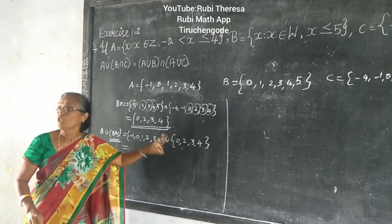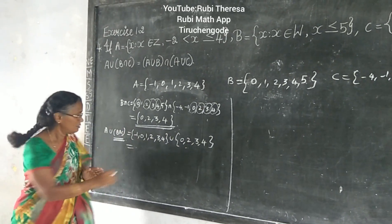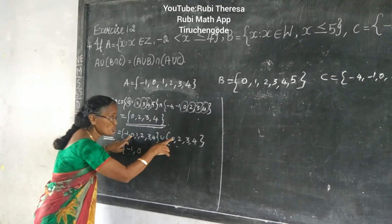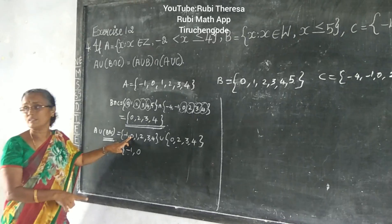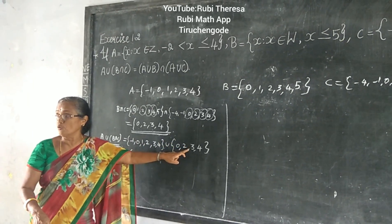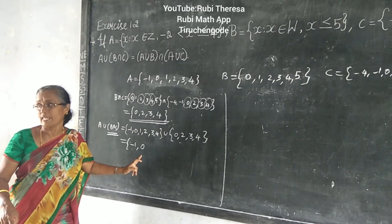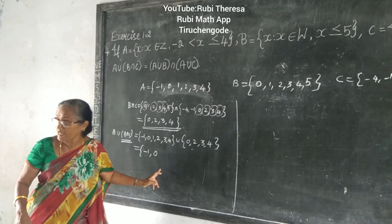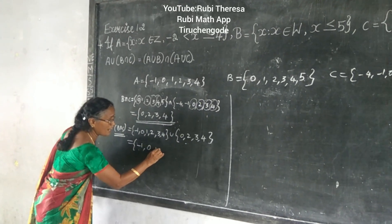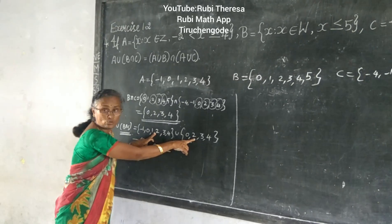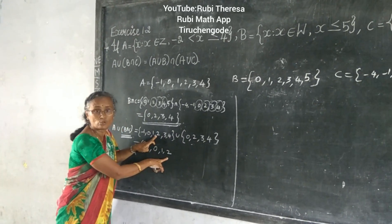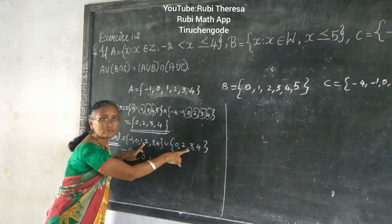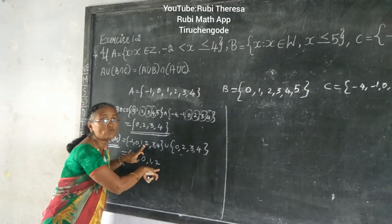When you are doing the union operation, you should not repeat the elements. Already the element is there — so when you are doing the union, you should not write it again. So: minus 1, 0, 1, 2 — only one time you must write. Here also 2 is there but you should not write it twice. Only once. When you are doing union, you should not write it again.